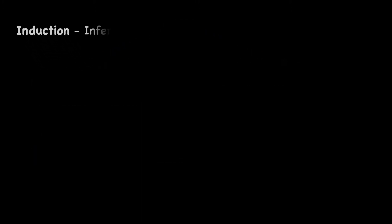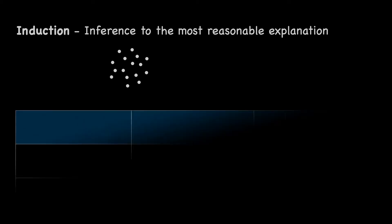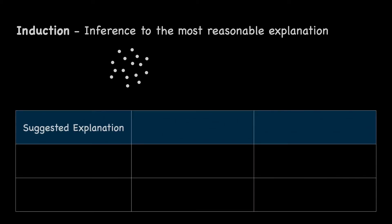We will start with induction about finding the most reasonable explanation. Upon observation of data, as represented here as data points, we attempt to give a possible explanation. The explanation may not be less than what is sufficient, otherwise it fails to account for all the data.